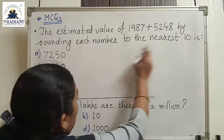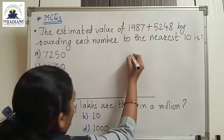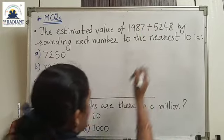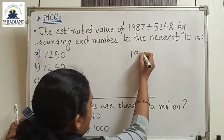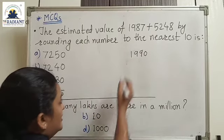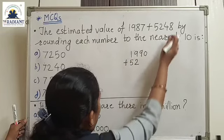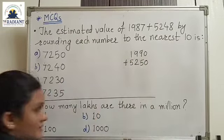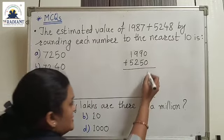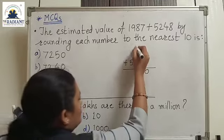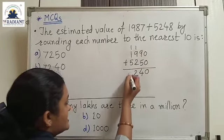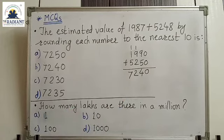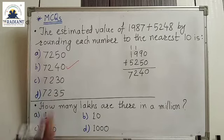Let's solve the sum. First we will find out the nearest 10s of these two numbers. 91,987 — the nearest 10 is 91,990. Plus 5,248 — the nearest 10 is 5,250. So 0 plus 0 is 0. 9 plus 5 is 14 — 1 carry 4. 9 plus 1 is 10, plus 2 is 12. And this is 7. So the answer is B: 7,240.